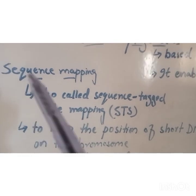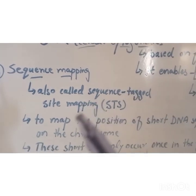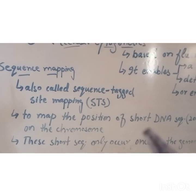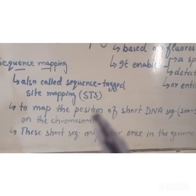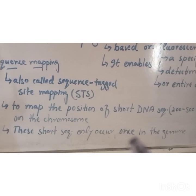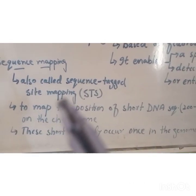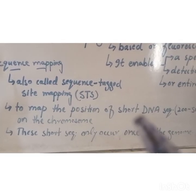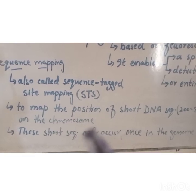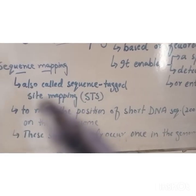The third technique is sequence mapping, also called sequence tagged site (STS) mapping. It is used to mark the position of short DNA sequences, mostly 200 to 500 base pairs, on the chromosome. These short sequences occur only once in the genome and are easily recognizable. Sequence mapping में वो short DNA sequences जो genome में एक ही बार present होते हैं, उनकी position की mapping की जाती है।